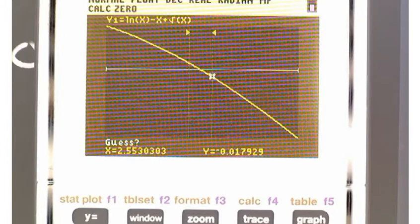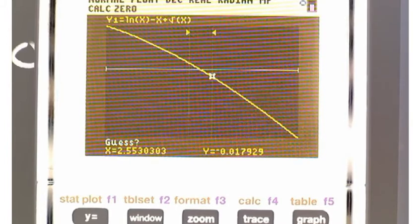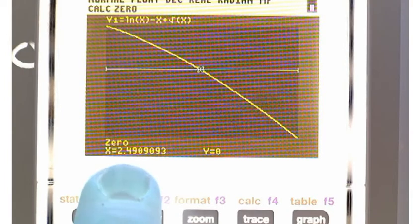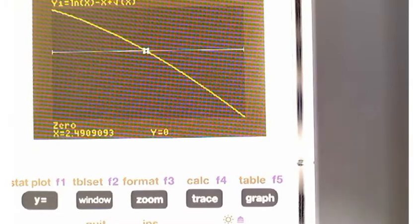And then it's going to ask you to press enter one more time before it gives you your answer. 2.4909 on the x-axis. It gives you y equals zero. So if I round that off a little bit, call it 2.491.